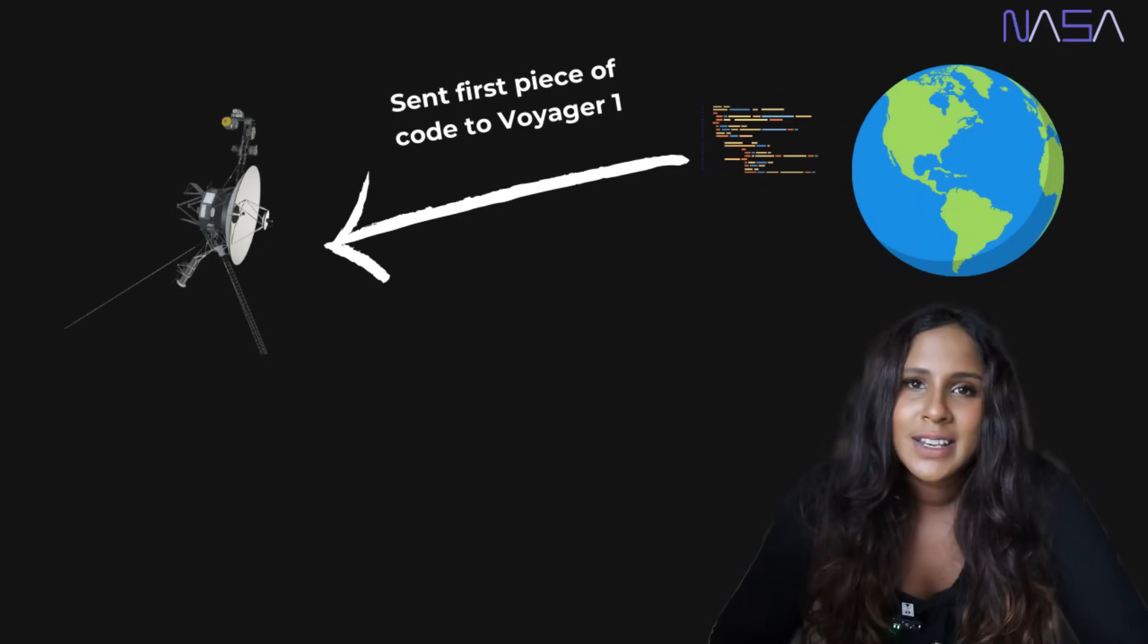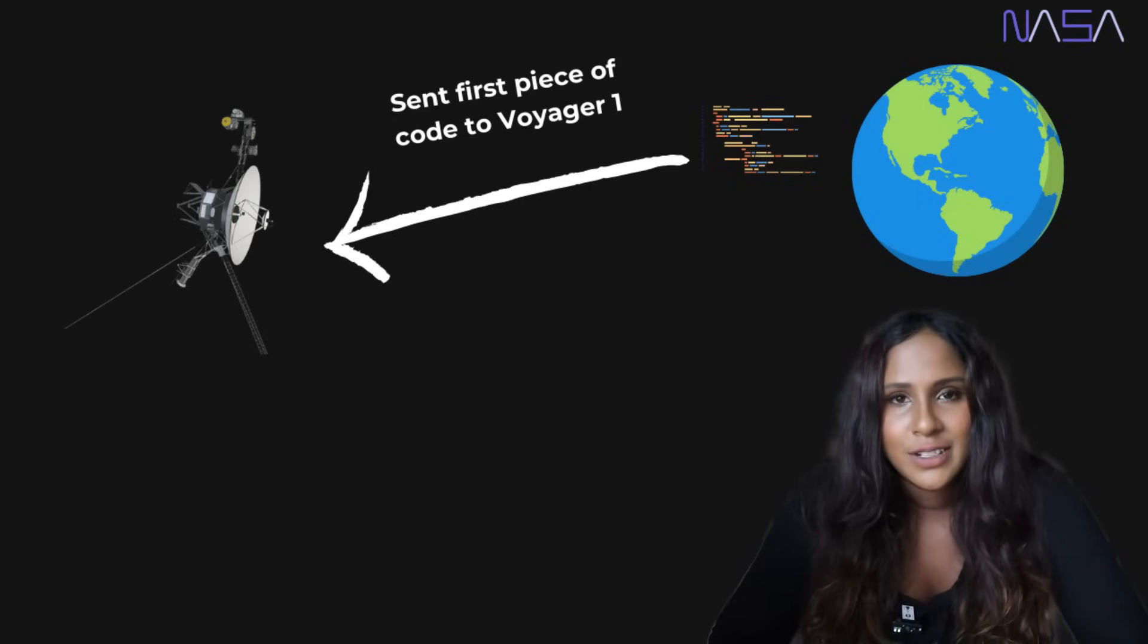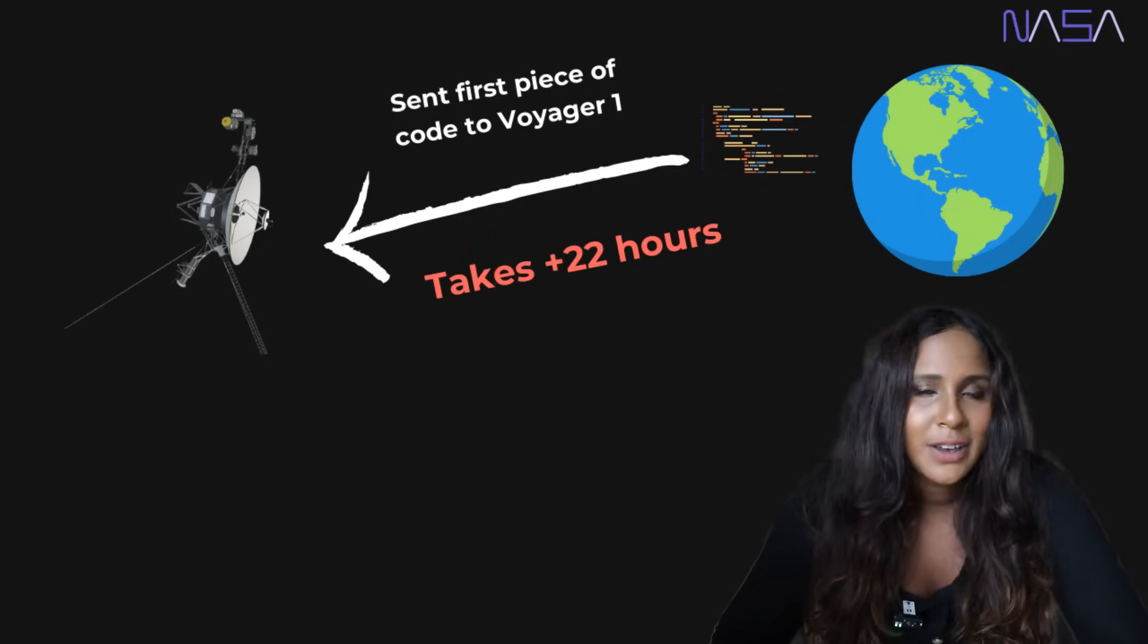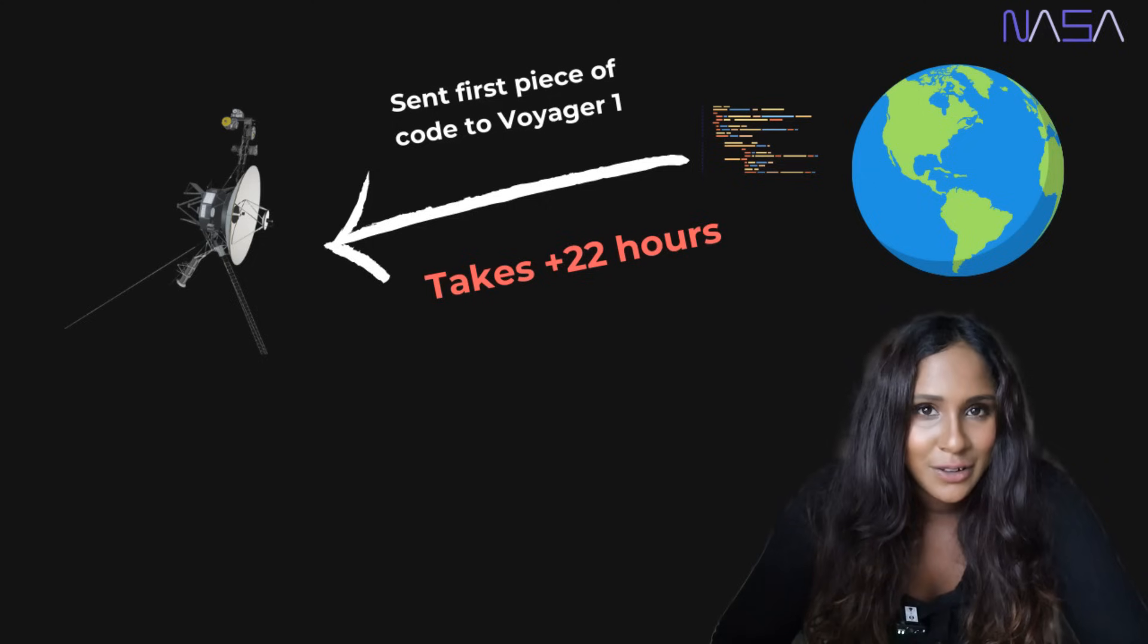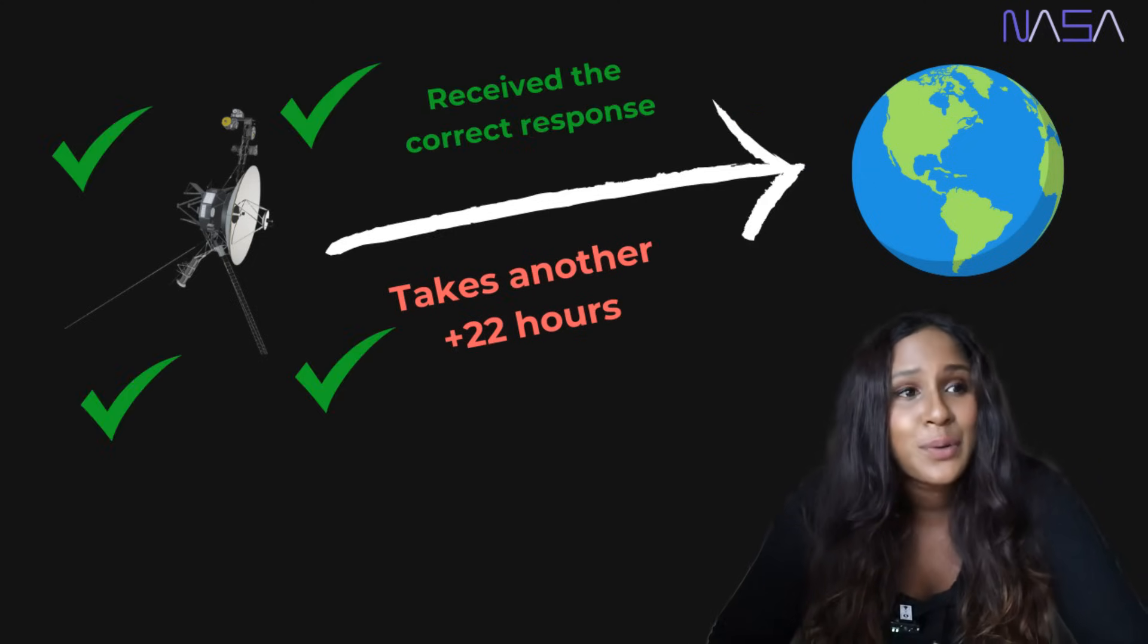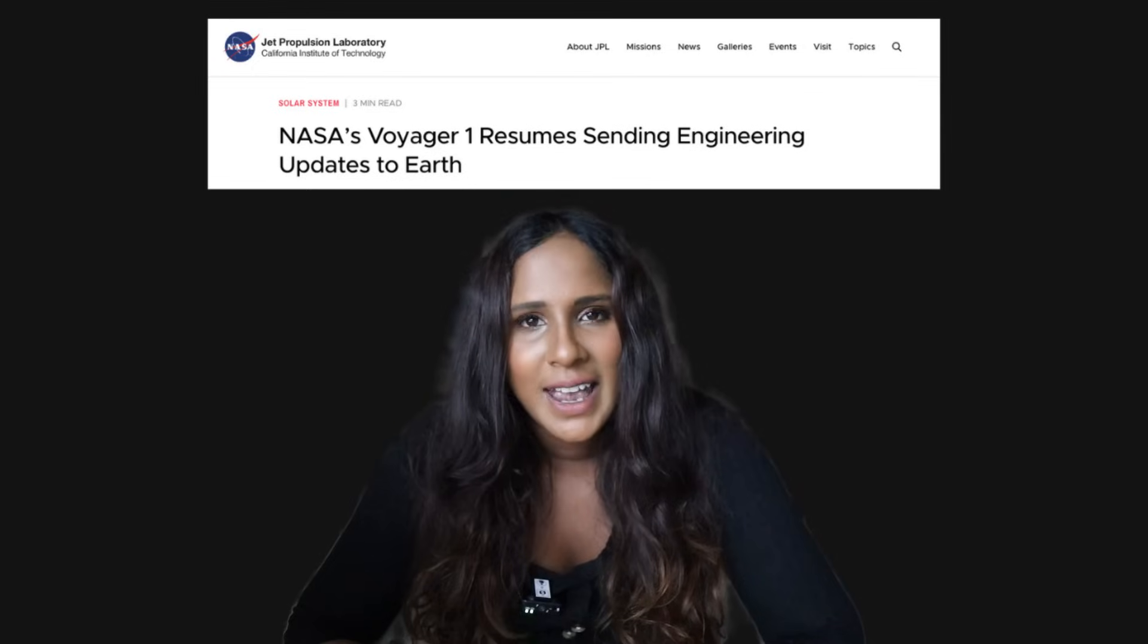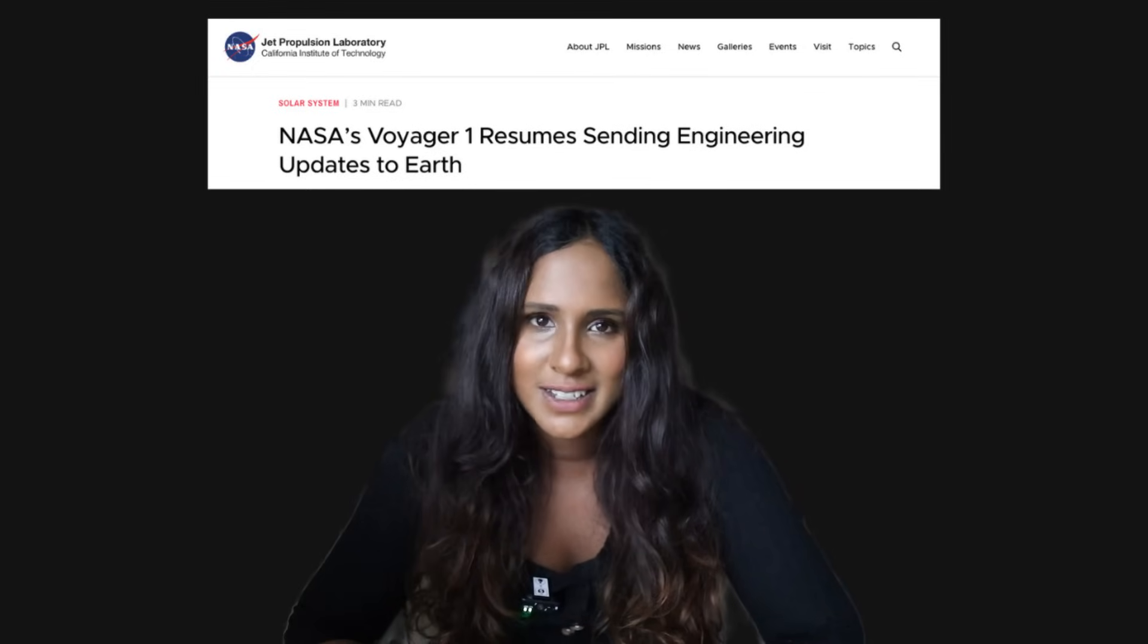So once it was done, they sent the first piece of relocated code to Voyager 1. Given the vast distance, it took about 22.5 hours for Voyager 1 to actually see and receive the command. And then NASA had to wait another 22.5 hours to hear back whether the command was successful or not. But by April the 20th, Voyager 1 successfully processed the new code and began sending back health and status updates. The first time in five months.